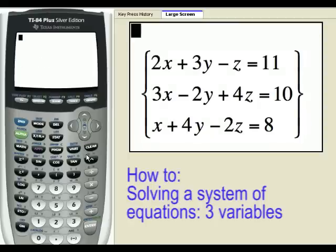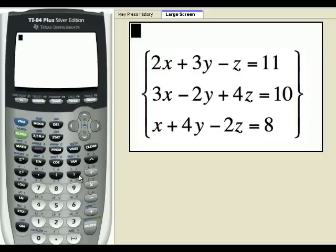Now suppose we want to solve this system of equations. 2x plus 3y minus z is equal to 11, 3x minus 2y plus 4z is equal to 10, and x plus 4y minus 2z is equal to 8.